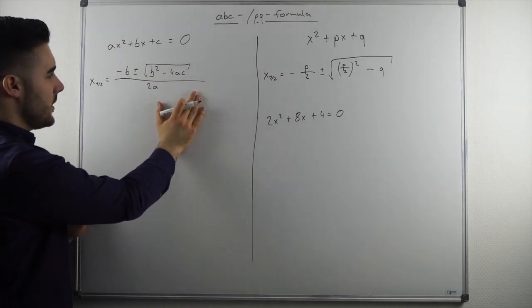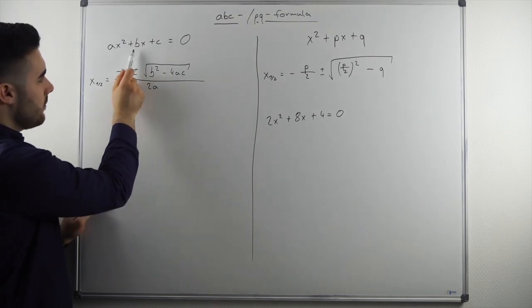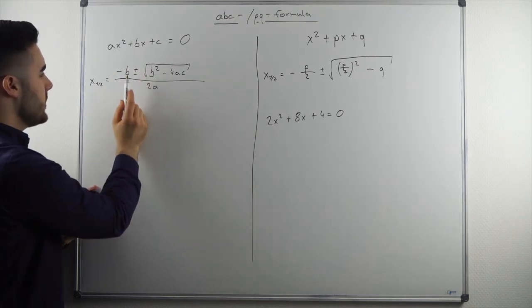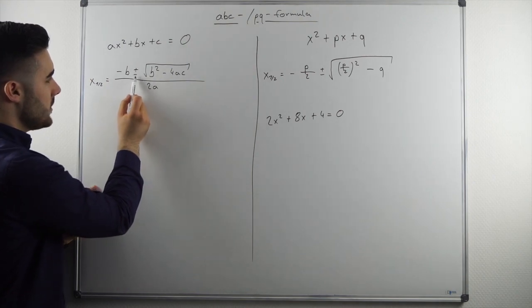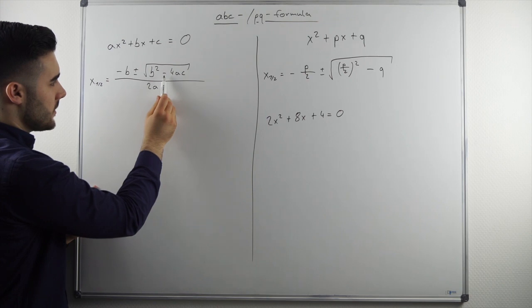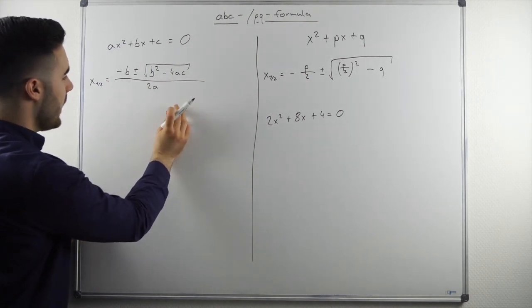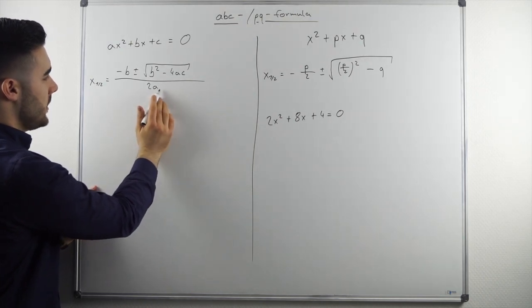First of all you write it as a fraction and then you will have minus b. So the b is the coefficient in front of x. Plus or minus the square root of b squared minus 4 times a times c. And then we divide this whole thing by 2 times a.